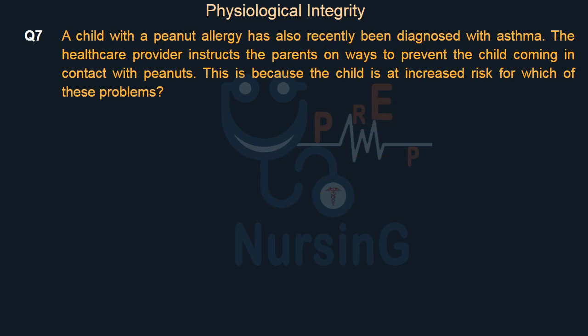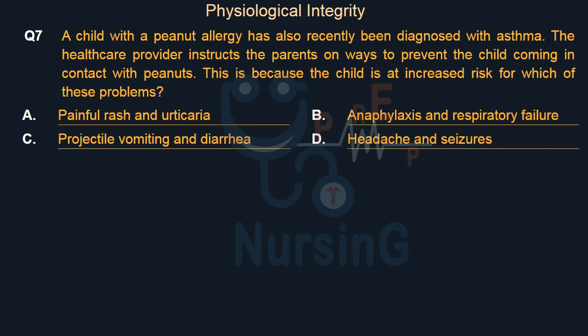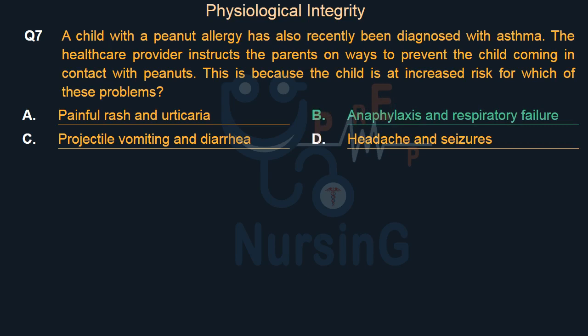A child with a peanut allergy has also recently been diagnosed with asthma. The healthcare provider instructs the parents on ways to prevent the child from coming in contact with peanuts. This is because the child is at increased risk for which of these problems? Option A: Painful rash and urticaria. Option B: Anaphylaxis and respiratory failure. Option C: Projectile vomiting and diarrhea. Option D: Headache and seizures. The right answer is Option B: Anaphylaxis and respiratory failure.